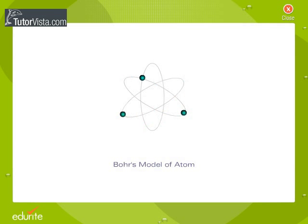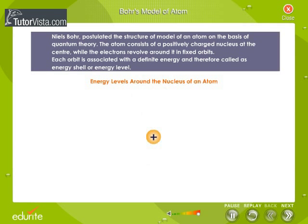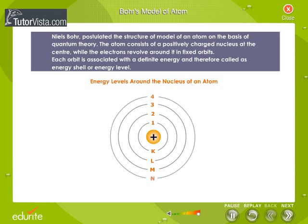Bohr's Model of Atom. Niels Bohr postulated a model of an atom on the basis of quantum theory. Each orbit is associated with a definite energy and therefore called an energy shell or energy level.